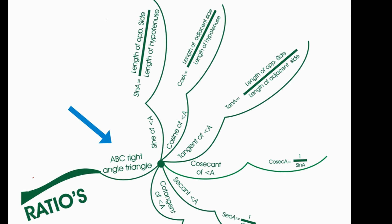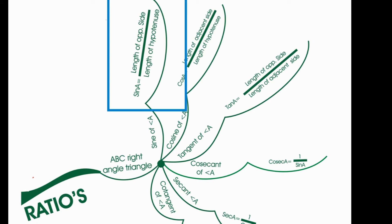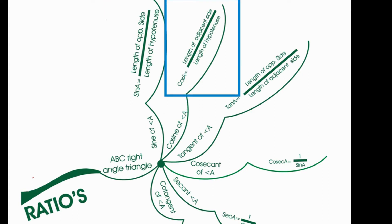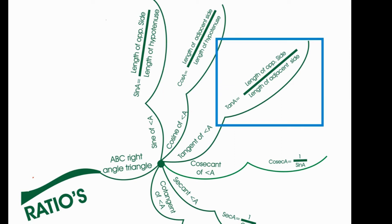Sine of angle A is called as sin A. Sin A is equals to length of opposite side by length of hypotenuse. Cosine of angle A is called as cos A. Cos A is equals to length of adjacent side by length of hypotenuse. Tangent of angle A is called as tan A. Tan A is equals to length of opposite side by length of adjacent side.